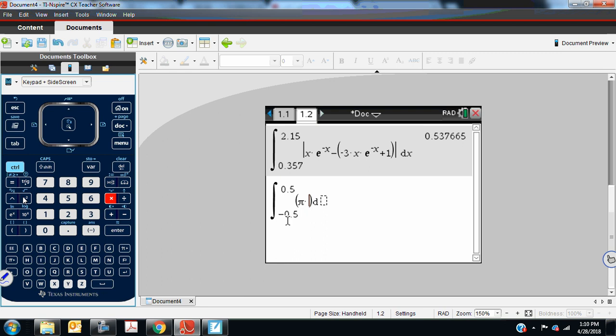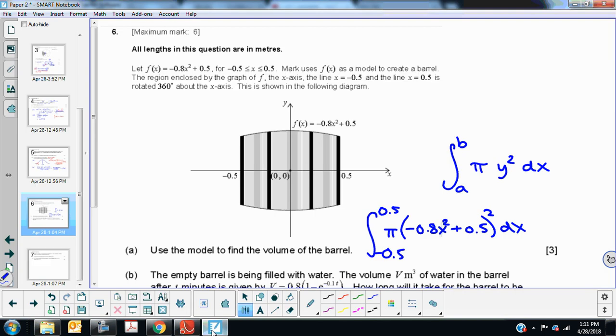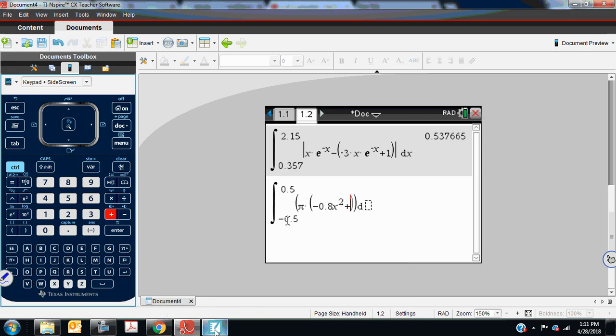So pi multiplied by parentheses. It was negative 0.8x to the second power. Let's just double check. Yeah, negative 0.8x to the second power, and then plus 0.5 quantity squared. So you go outside the parentheses and square that, and then there's a dx at the end so that it knows you're integrating with respect to x.